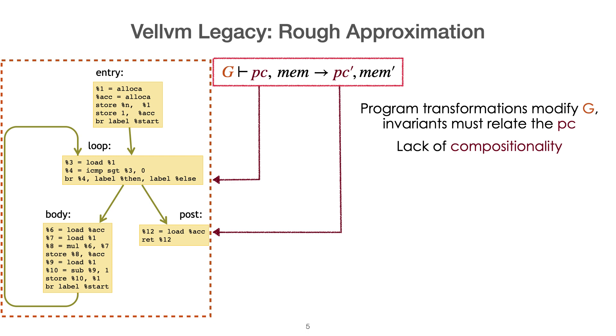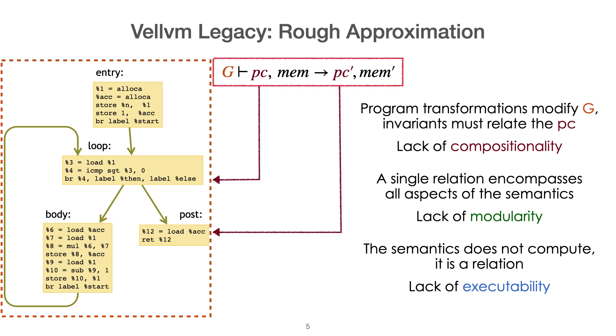More generally, you lack compositionality. Another aspect is that a single relation is encompassing all the aspects, all the effects of your semantics. If you modify one part of it, it's therefore extremely hard to know what part of the development will break. You lack modularity. And finally, intrinsically, this semantics does not compute. It is a relation. It goes into prop in the Coq lingo. It therefore lacks executability and if you want to perform testing, you will have to work extra hard.